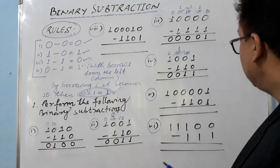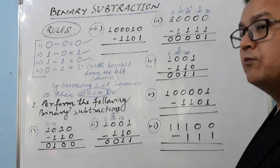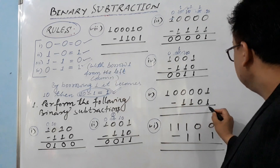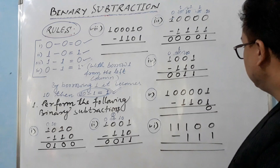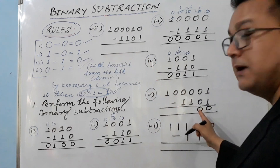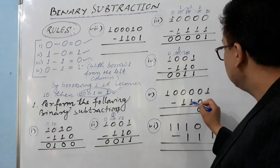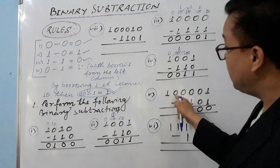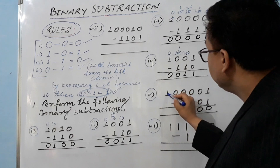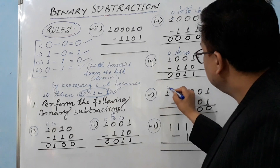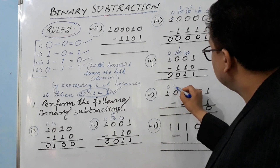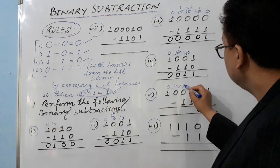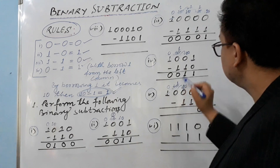Now let's move to this question. I think you now have more ideas and are more clear about subtraction. One minus one equals zero. Zero minus zero equals zero — first rule, no problem. Now here: zero minus one — we need to take borrow from the left. Left of this is also zero, left of that is also zero, but further left there is one, so from there we start to take borrow. It becomes 10 here and intermediate positions become 10 through the chain. 10 minus one equals one.